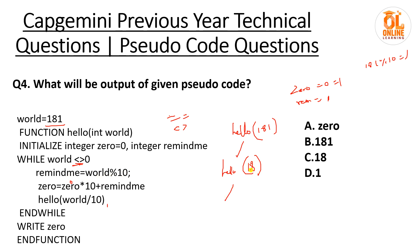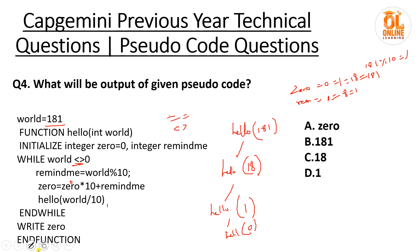Second iteration: rem equals 18 % 10 = 8. o equals 1 * 10 + 8 = 18. world equals 18 / 10 = 1. Third iteration: world != 0, yes. rem equals 1 % 10 = 1. o equals 18 * 10 + 1 = 181. world equals 1 / 10 = 0. Now world equals 0 so the loop breaks. Print o — the latest value of o is 181, so option B is the correct answer.